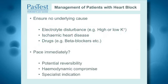What about managing patients with complete heart block? One of the first and most essential things is to ensure there's no underlying cause. It's very easy to jump in and start putting a pacing wire into someone when there's a potentially reversible cause. One of the most frequent causes is profound electrolyte disturbance — a potassium which is very high or very low. If you correct that potassium, the patient may go from complete heart block back into sinus rhythm, avoiding the need for pacing.